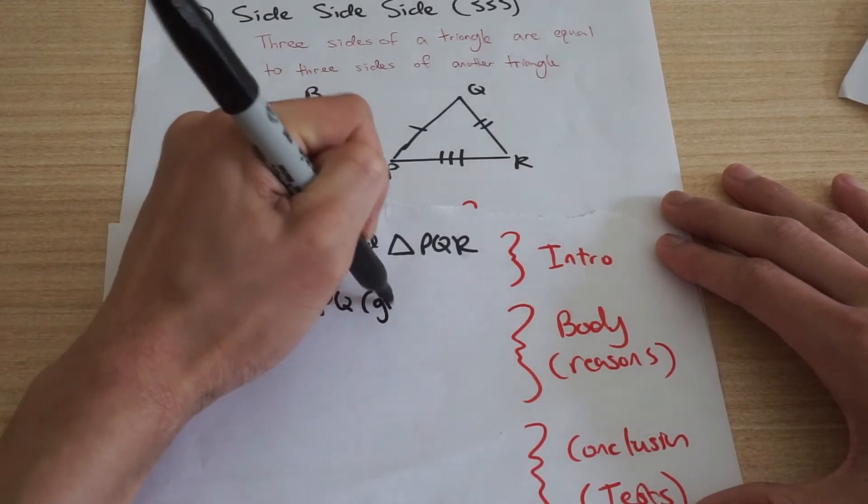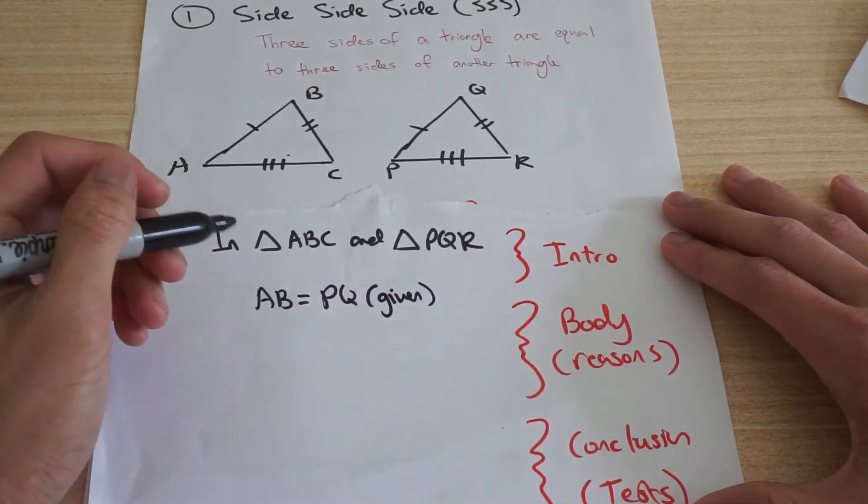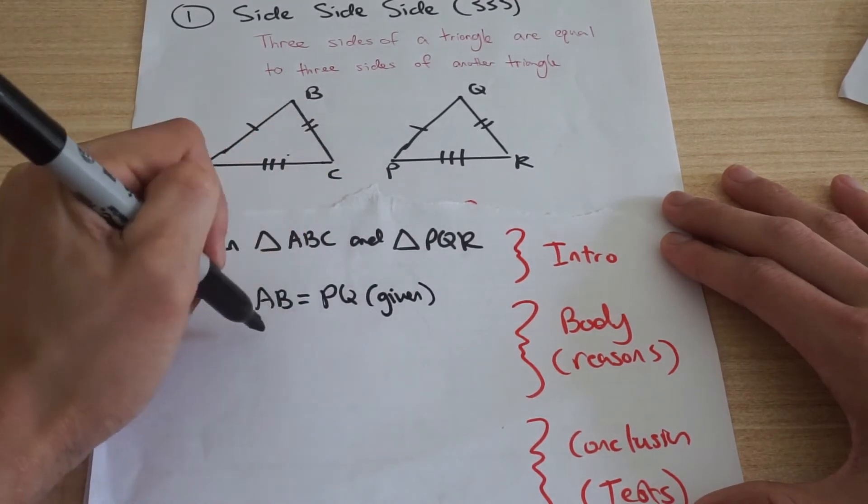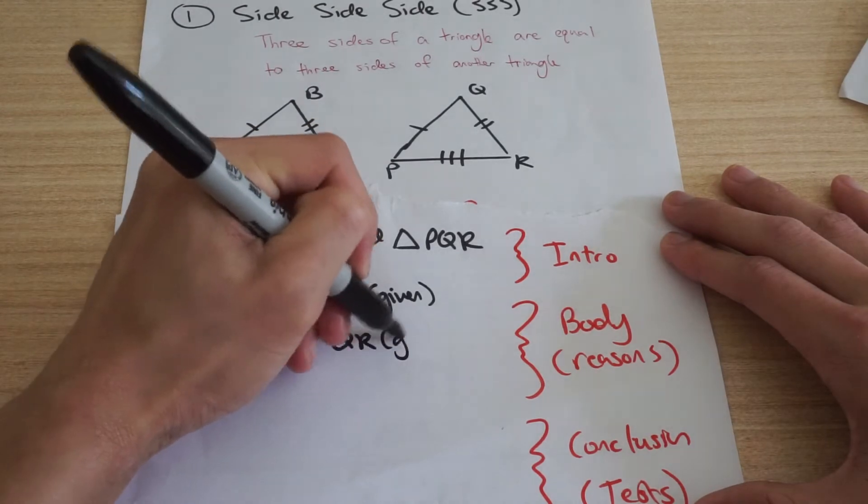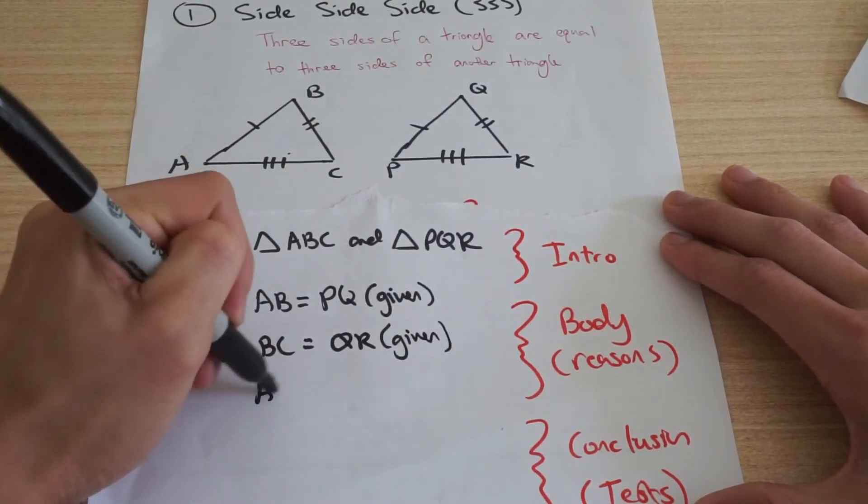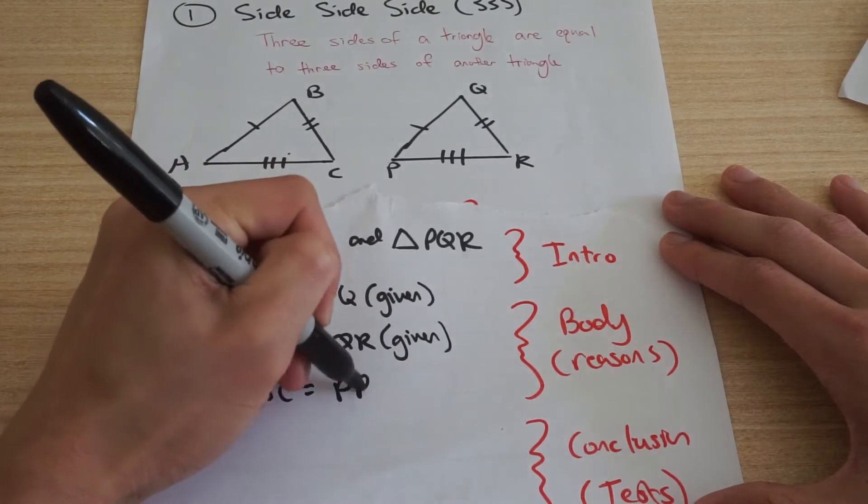Why is that? Well, because they've given it to me. They've got those marks there. What else I know is equal? I've got BC is equal to QR. That's given. And I've got AC equals to PR. That's given.